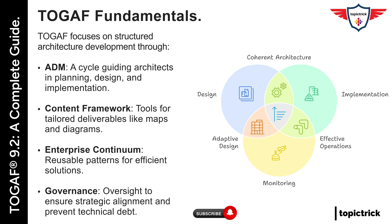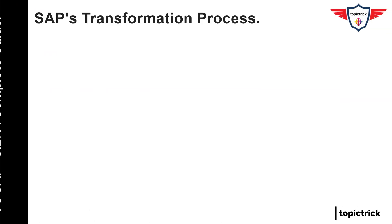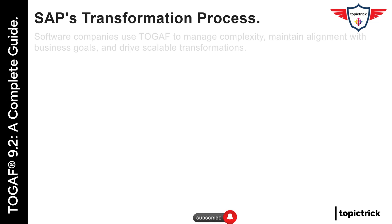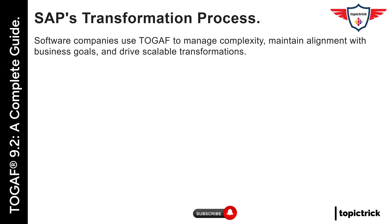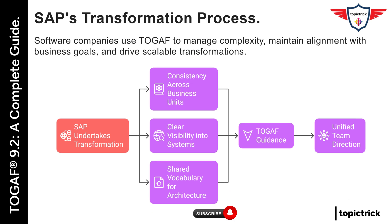Now let's take a real-world example. Consider a global software provider like SAP. When SAP undertakes a large-scale platform redesign or integrates a new acquisition, they need consistency across business units, clear visibility into systems, and a shared vocabulary for architecture. Frameworks like TOGAF help guide these transformations at scale, ensuring that different teams aren't pulling in different directions.